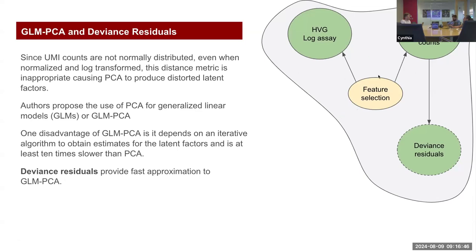To summarize: the standard method is to compute highly variable genes over the log-normalized data. But if you have over-dispersed data, you have the alternative of picking genes using the high deviance model, which is performed on raw counts. If you have computational issues, you should probably use the deviance residuals. This is important because PCA during dimensionality reduction can lead to projections that generate false positives, which will also impact clustering downstream.